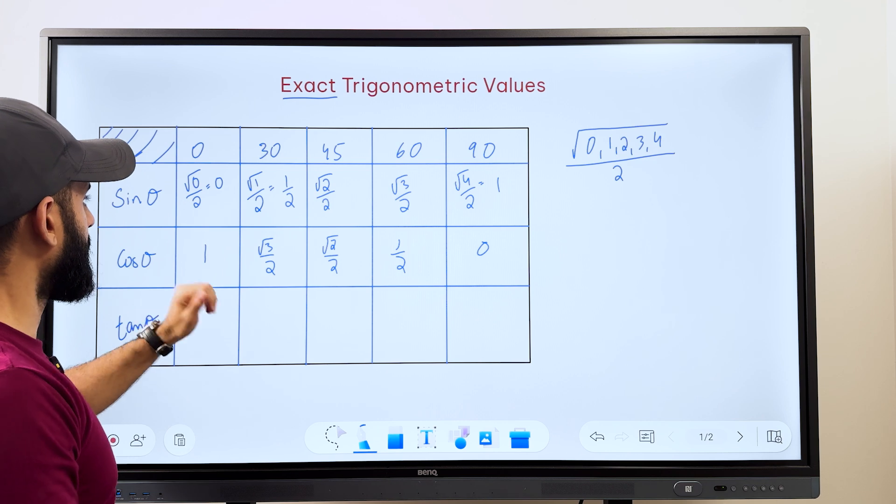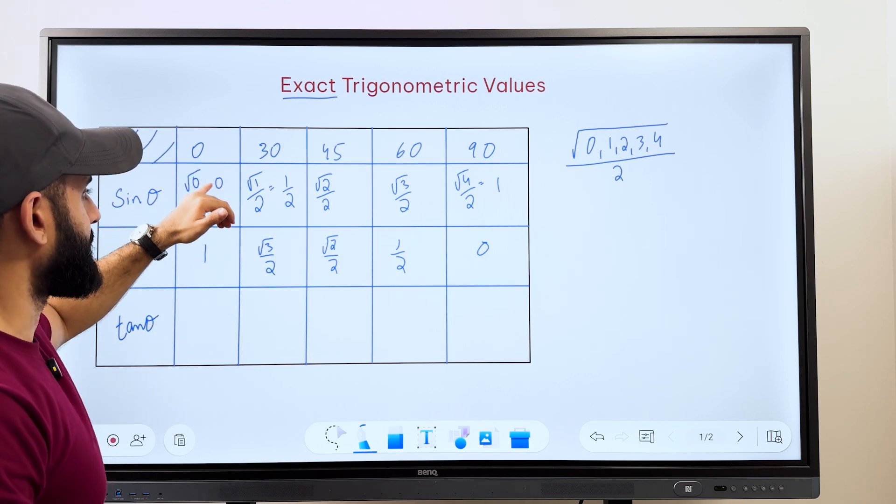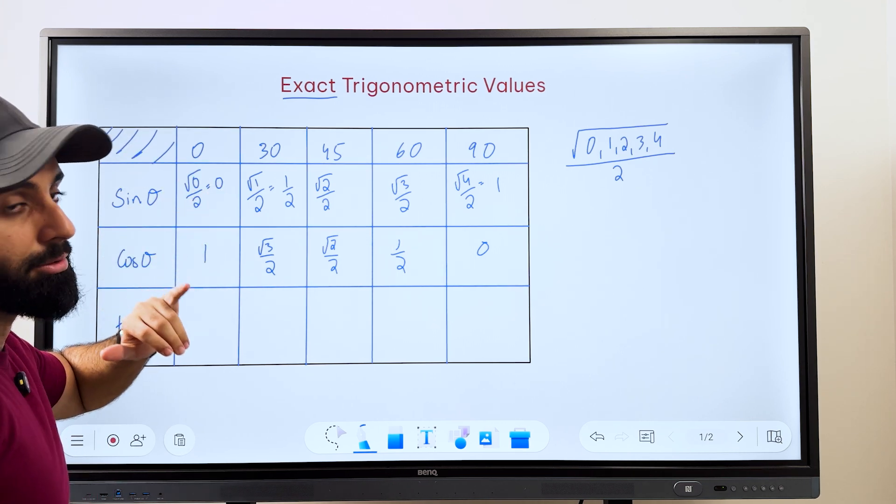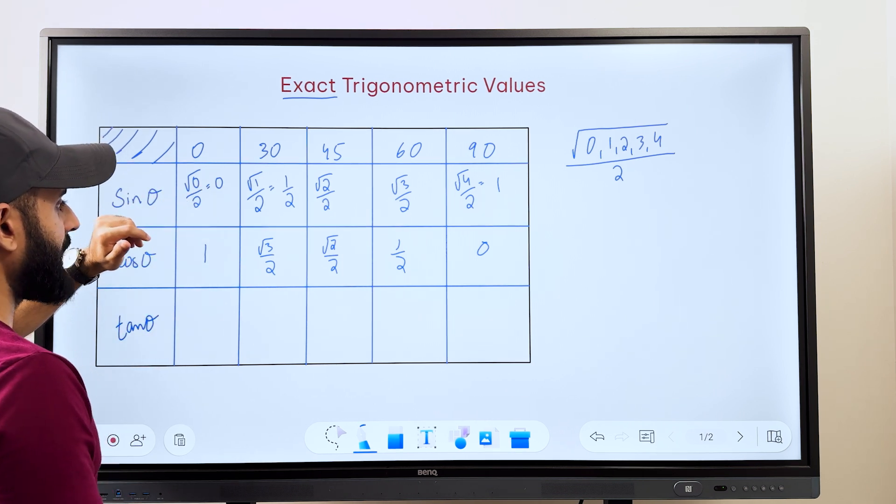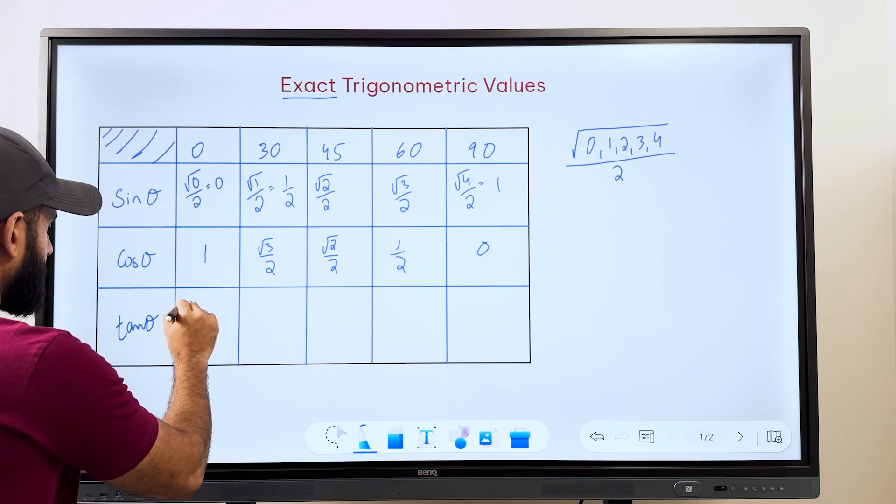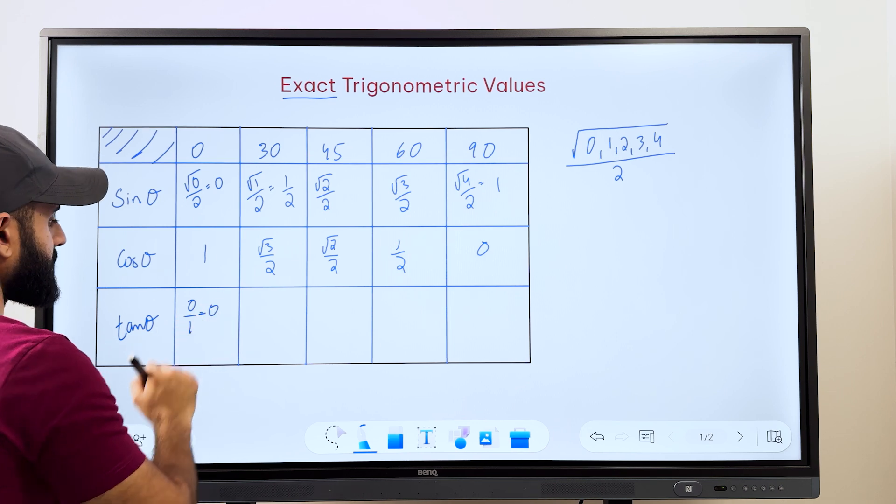If you don't, nothing to worry about. All you got to do is divide the value of sin with the value of cos of the corresponding value. So for example, tan 0, we'll take the value of sin 0 divided by cos 0. So that's 0 upon 1, which is equal to 0.